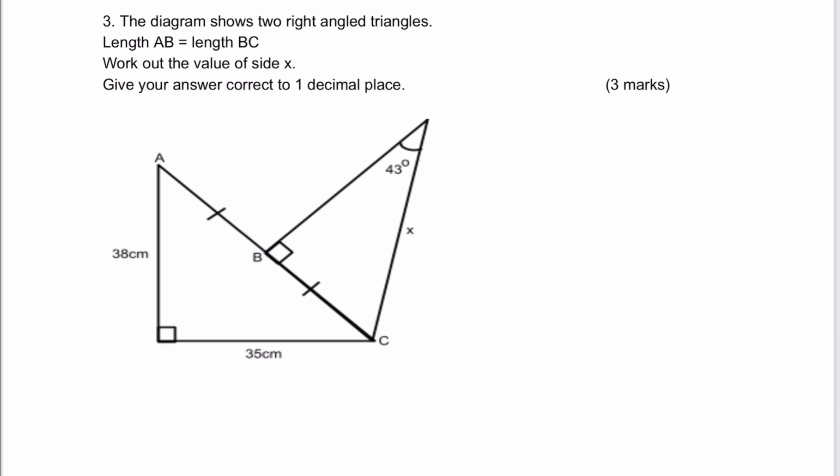The diagram shows two right-angled triangles. As soon as we see this, we should be thinking about Pythagoras and SOHCAHTOA. Both of those should be at the forefront of our mind when we're looking at right-angled triangles. What we're being asked to do is work out the value of side X, which is this side along here.